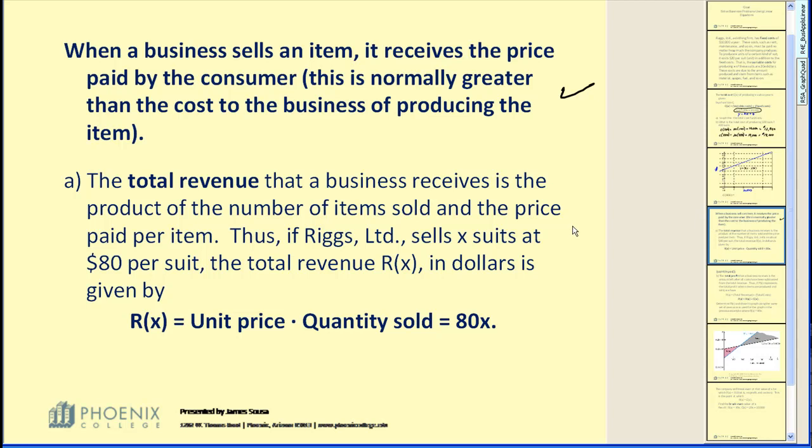The total revenue that a business receives is the product of the number of items sold and the price paid per item. So if Riggs Limited sells X suits at $80 per unit, or per suit, the total revenue would simply be 80 times X. So our revenue equation, or revenue function, R(x), is equal to the unit price, which is $80, times the units sold, which is X, giving us 80X.